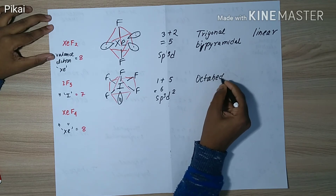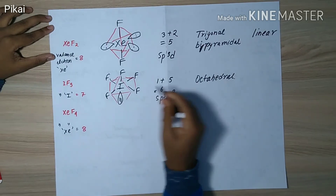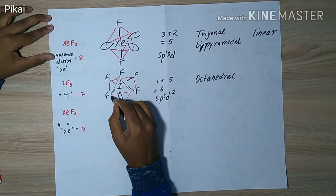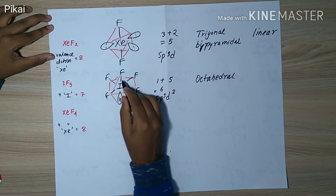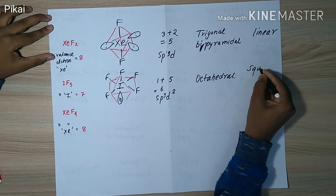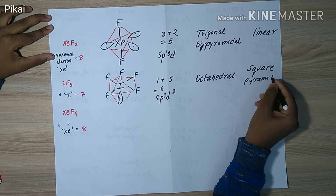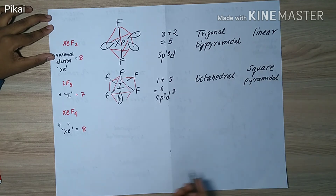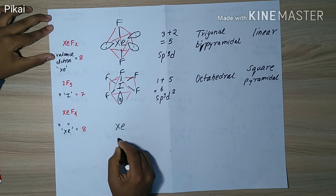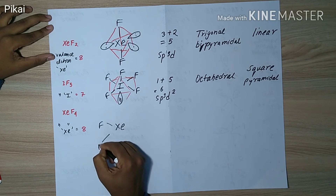This six denotes sp3d2 — one s, three p, and two d orbitals. The hybridization is sp3d2, and this gives octahedral geometry. If we don't consider the lone pair, the molecular shape is square pyramidal — a square base with a pyramid above.